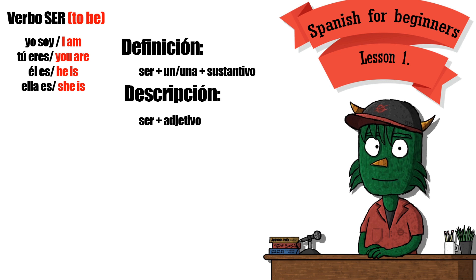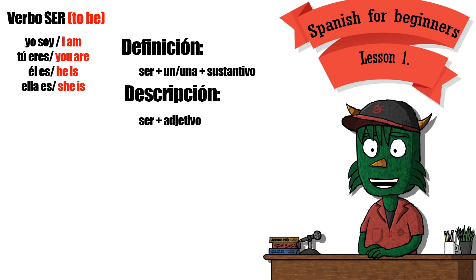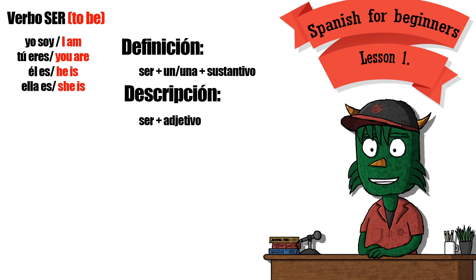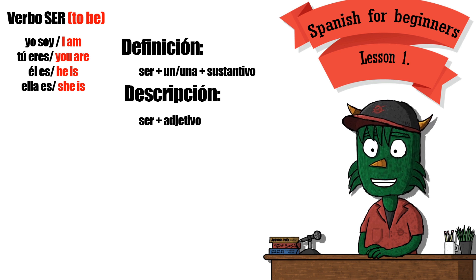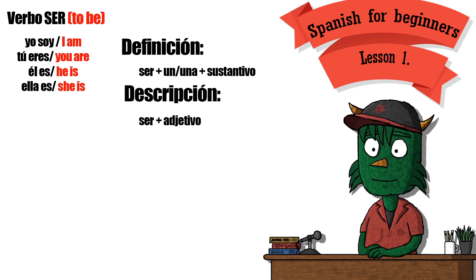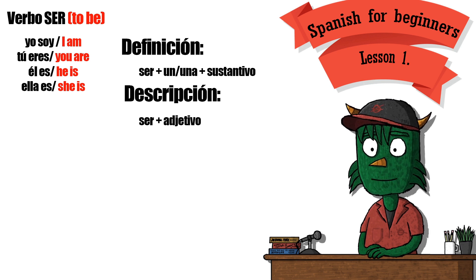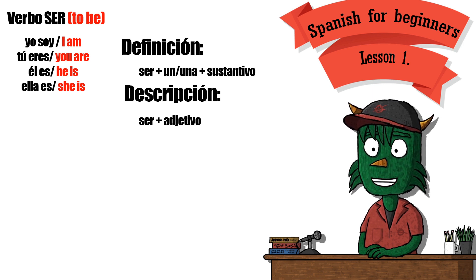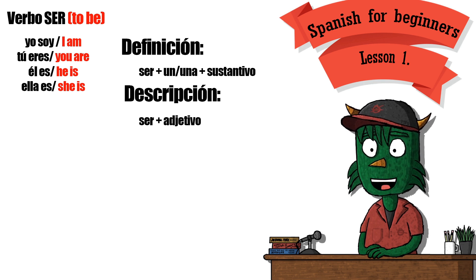Utilizamos el verbo ser para definir: ser más un o una más sustantivo — to be plus a noun. Utilizamos el verbo ser también para describir — we use the verb ser to make a description, and the structure is ser plus adjective. Ser más adjetivo.